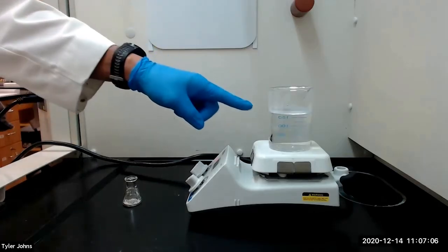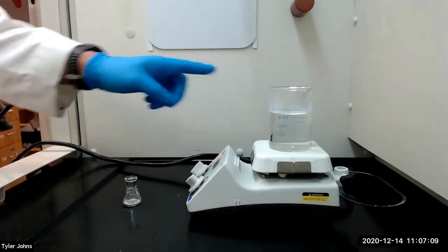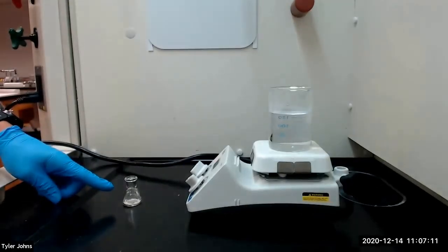We will next add three milliliters of hot 70 degrees Celsius water to the crystals in the 10 milliliter Erlenmeyer flask. We will then stir the mixture until all of the solid crystals have dissolved.